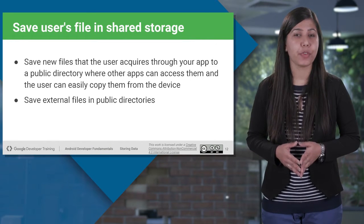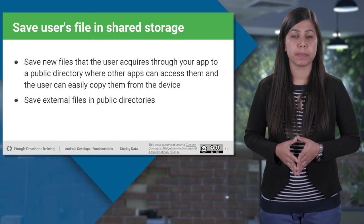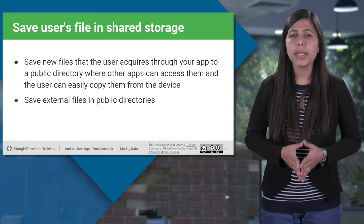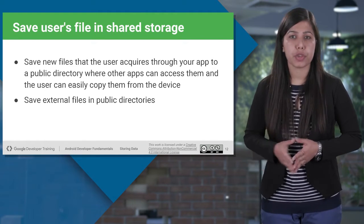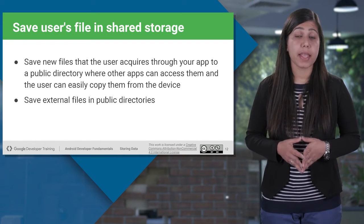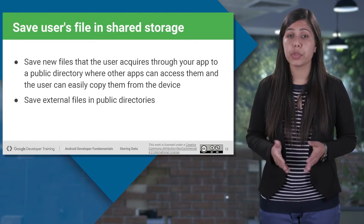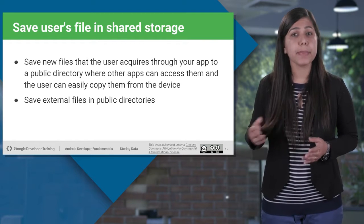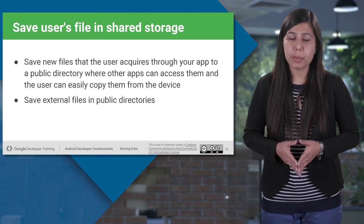In Android, you might want some files that can be used by other applications as well. Generally, new files like images and music that the user may acquire through your app should be saved to a public location so that other apps can access them and the user can easily copy them from the device. When doing so, you should use one of the shared public directories, such as Music to save music files and Pictures to save images.